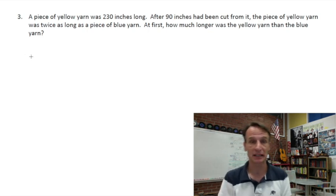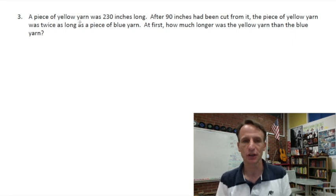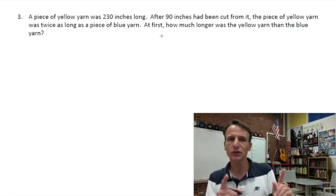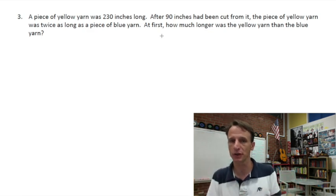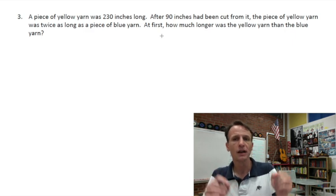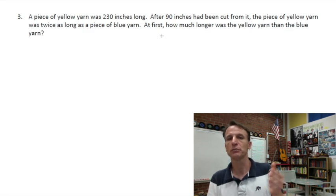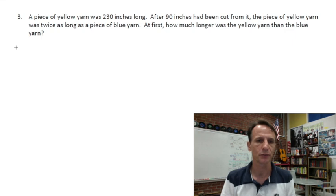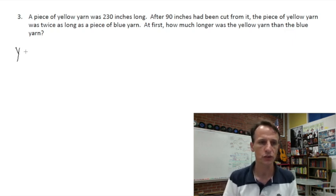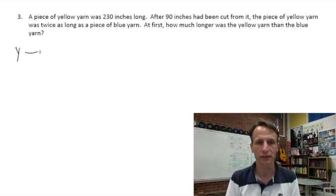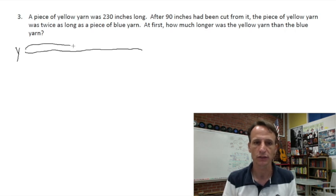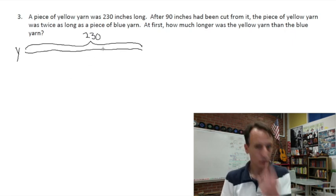Well, number 3 is a bit of a mind bender. Let's read it. A piece of yellow yarn was 230 inches long. After 90 inches had been cut from it, the piece of yellow yarn was twice as long as a piece of blue yarn. At first, meaning before it was cut, how much longer was the yellow yarn than the blue yarn? Like I said, a bit of a brain bender there, but when you draw it out, and this is what tape diagrams are all about, when you draw it out, you see what's going on. So let's draw the piece of yellow yarn, and I'm just going to draw a line rather than a tape.